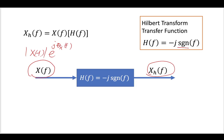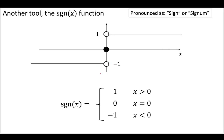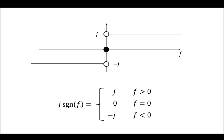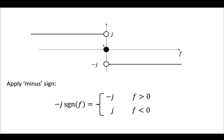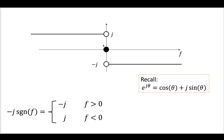First we have signum f, which looks like this: the signum function going from -1 to 1. If we change it to j signum f, we've multiplied our signum function by j, so it goes from -j up to j. Applying the minus sign flips it — positive for negative frequencies, negative for positive frequencies. So now we have applied the minus sign. Our -j signum f is defined as -j for frequencies above zero and j for frequencies below zero.